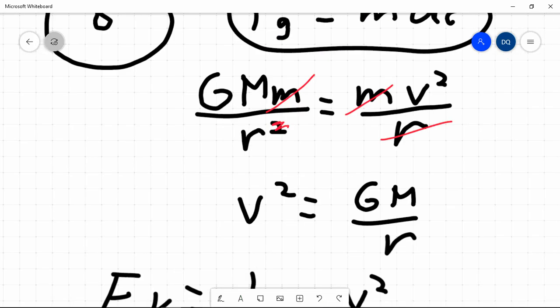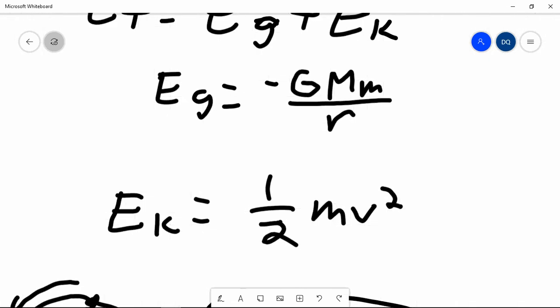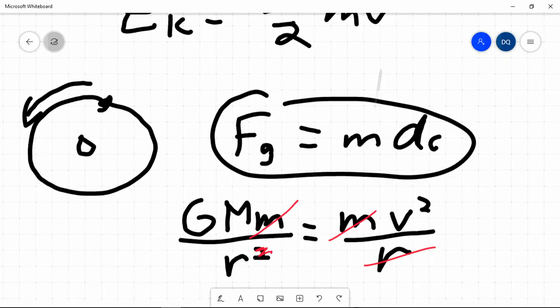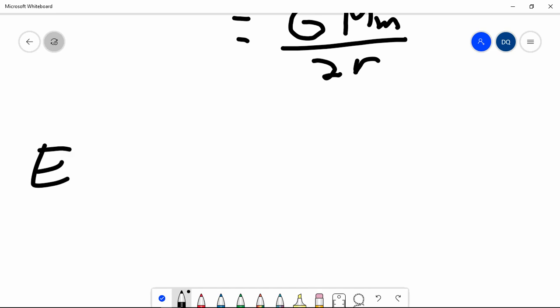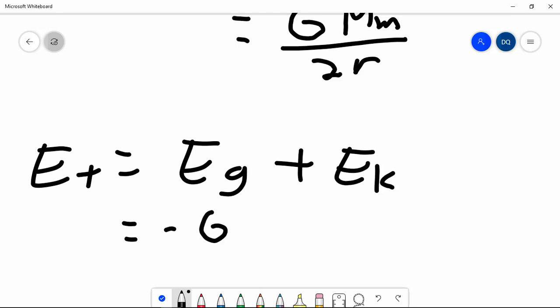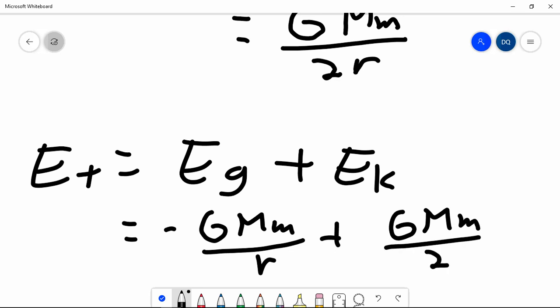Now that's interestingly familiar, since the gravitational potential energy is negative GMM over R. GMM over 2R, that makes the total mechanical energy, which is the gravitational potential energy plus the kinetic energy, negative GMM over R plus GMM over 2R.